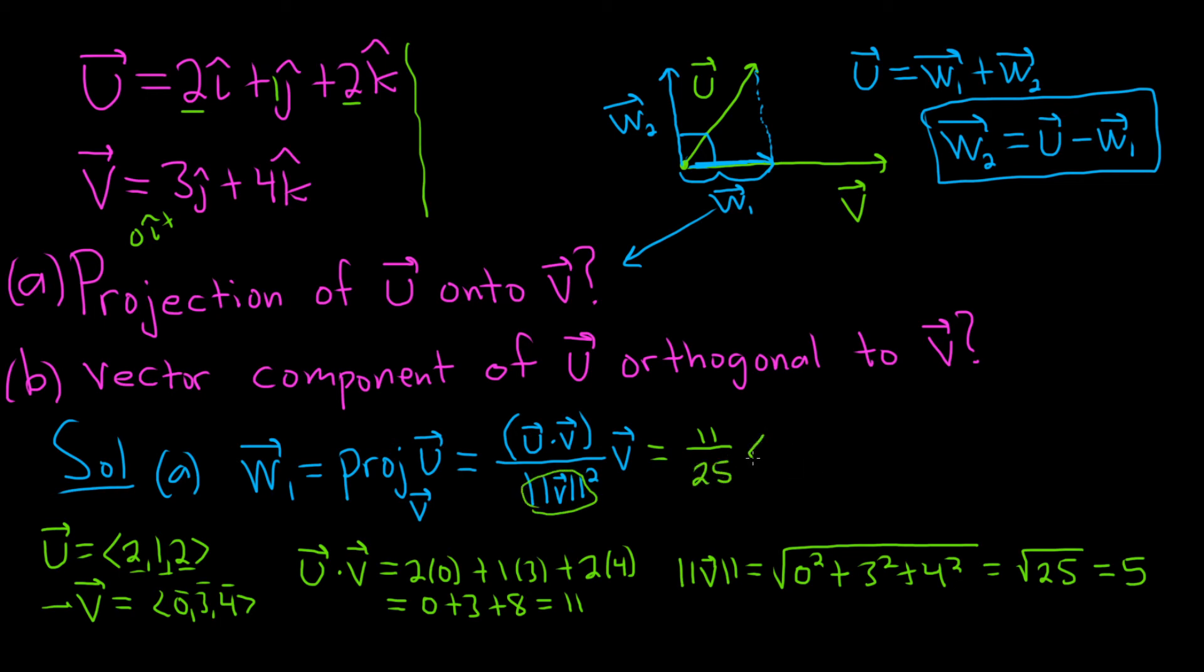Here we have v, which was 0, 3, 4. Then you distribute. So 11 over 25 times 0 is 0, then you get 33 over 25, and 44 over 25. Not the prettiest answer in the world. That's part A.